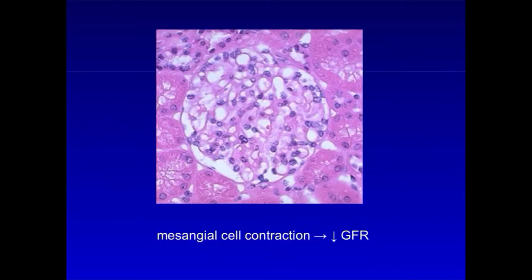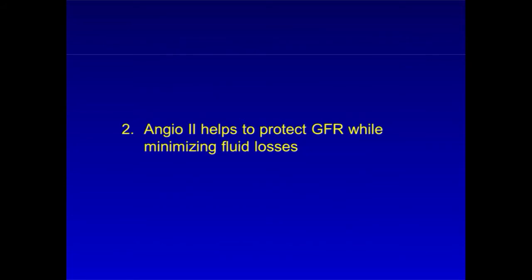One of the ways that angiotensin II decreases GFR, besides simply decreasing renal blood flow, is through its action on mesangial cells. These cells, which can be seen here sitting between the capillary loops of the glomerulus, contain myofilaments that allow them to contract and wrap around glomerular capillary loops. This constricts the loops, helps to decrease GFR, and thus minimizes fluid losses through the kidney.